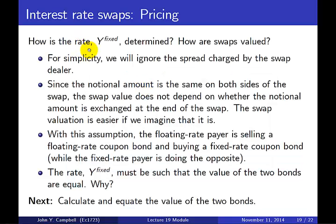How is the fixed rate Y_fixed determined and how are swaps valued? For simplicity we ignore the spread charged by the swap dealer. An important point: since the notional amount is the same on both sides, swap value doesn't depend on whether the notional amount is exchanged at the end, because that would just be N for N and would cancel out. But for thinking about valuation, it's easier to imagine the notional value is exchanged. With this assumption, the floating rate payer is effectively selling a floating rate coupon bond and buying a fixed rate coupon bond, while the fixed rate payer does the opposite. We determine Y_fixed such that the value of the two bonds is equal — because no money should change hands at the beginning, the bonds being exchanged must have equal value.